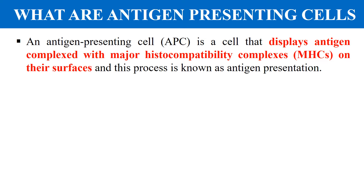The name indicates that these are the cells which present the antigen to the T lymphocytes, because T cells do not recognize the antigen alone. They only recognize the antigen when it comes in combination or in complex with MHC. So these antigen presenting cells display the antigen complexed with MHC — major histocompatibility complex — by first binding the antigen to the MHC molecule. This complex of antigen and MHC molecule is then displayed on their surface, presenting the antigen to T lymphocytes. This process is known as antigen presentation.